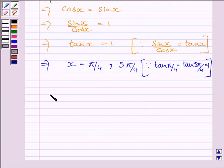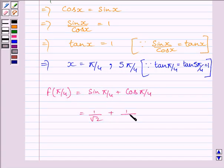Now let us find out f(π/4). f(π/4) is equal to sin π/4 plus cos π/4. This is equal to 1 upon root 2 plus 1 upon root 2, which is further equal to 2 upon root 2.